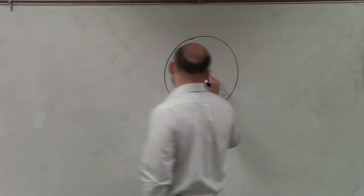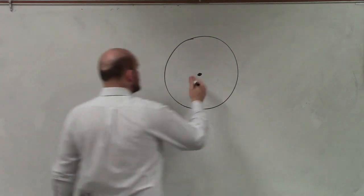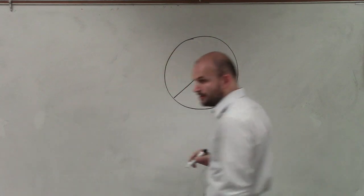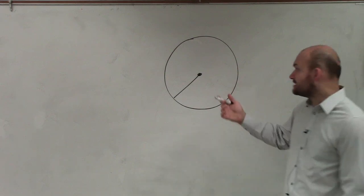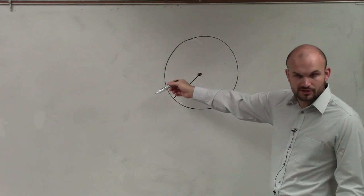First, I want to make sure we have some definitions that are correct. When we're looking at a circle, we talked about a central angle, right? A central angle is comprised of two radii coming together. A radius is the distance from the center to the outside, a point on the circle.